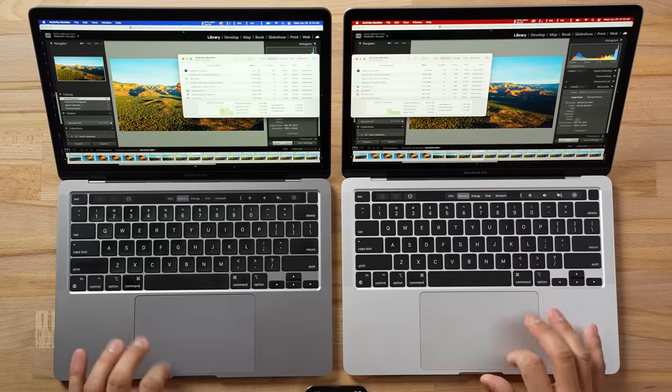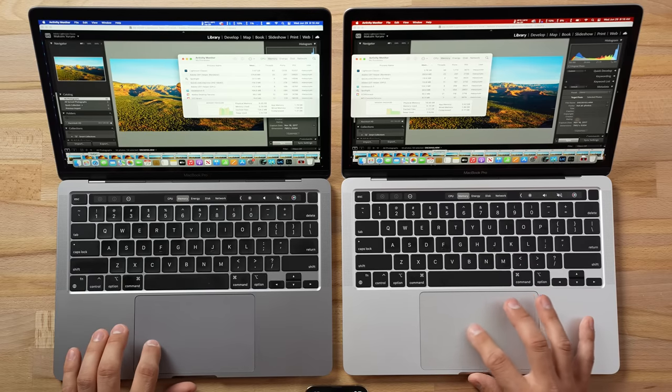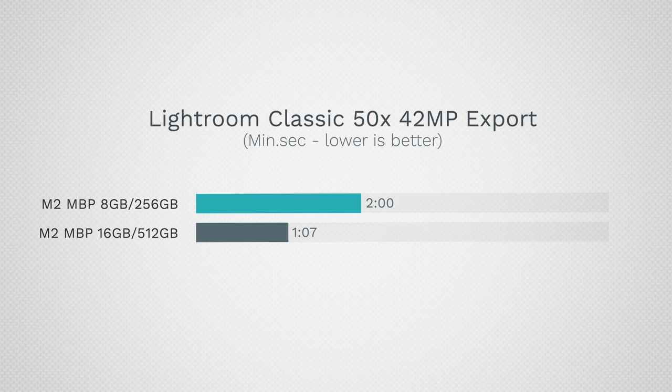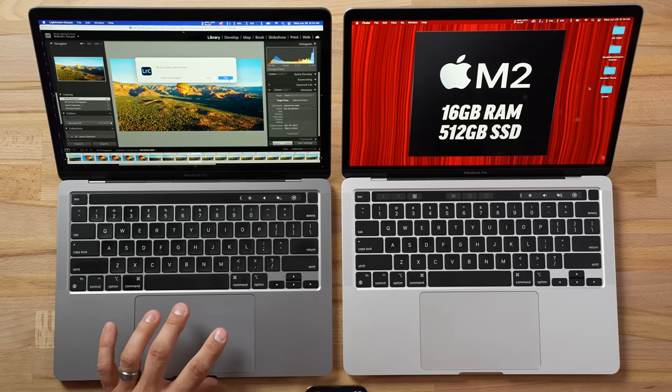Waiting on the 8GB model — and all we have open is Lightroom and Activity Monitor, nothing in Safari. The M2 8GB took two minutes flat, that's the best time we got. The 16GB with 16 gigs of RAM took one minute and seven seconds — almost twice as fast. We'll run this again with web browsing open.